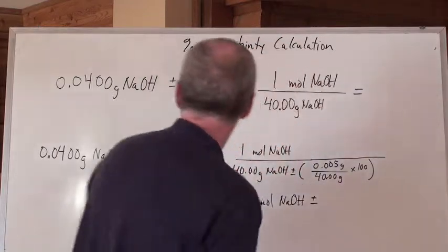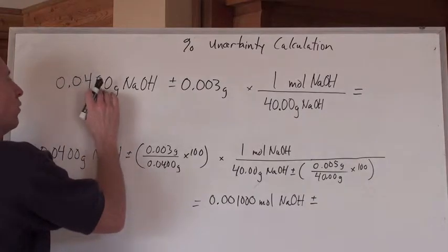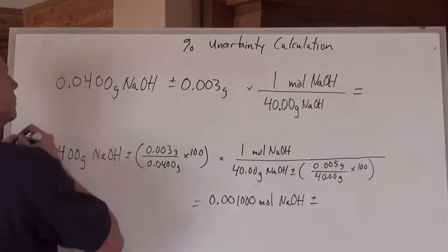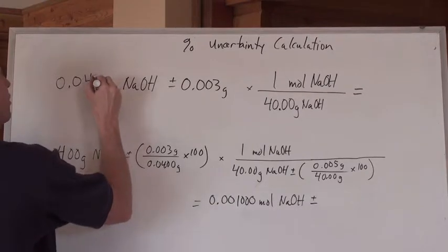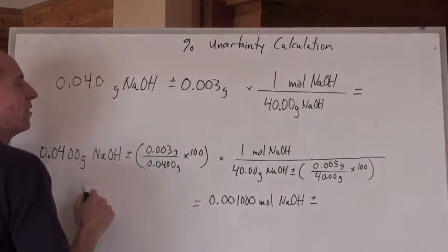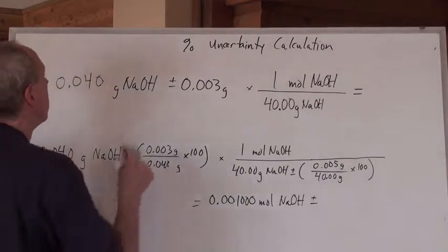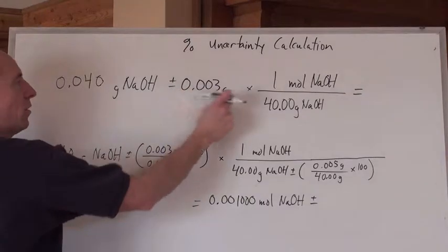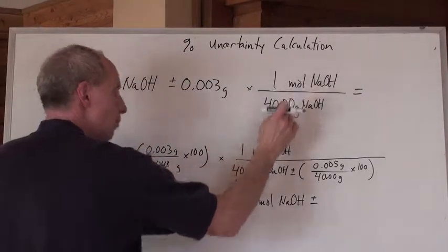Well, now, here's the deal. If we weighed out the NaOH and it was 0.0400 grams on the scale, that's good to three numbers after the decimal and that uncertainty is three numbers after the decimal. So, there's the uncertainty in an absolute fashion right there and here's the molar mass.